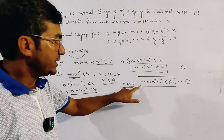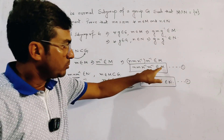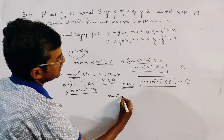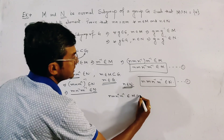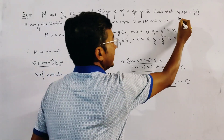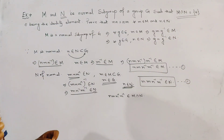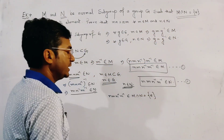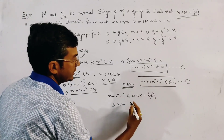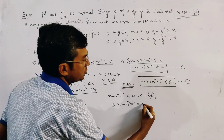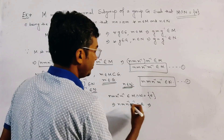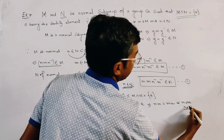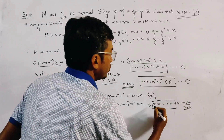From these two relations, it is clear that the element m·n·m⁻¹·n⁻¹ belongs to both normal subgroups. So we write m·n·m⁻¹·n⁻¹ belongs to M intersection N. But it is given that M intersection N equals E, so m·n·m⁻¹·n⁻¹ equals the identity. From here, mn equals nm for all m in M and n in N. This completes our proof.